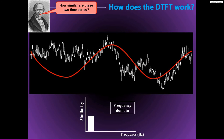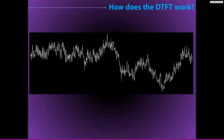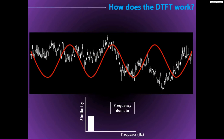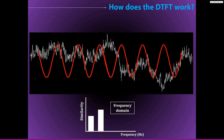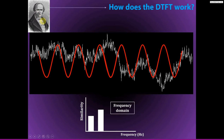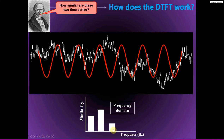The Fourier transform involves performing the same procedure for many steps. We start with exactly the same data and do the same procedure but with a sine wave of a different frequency. At each step of the Fourier transform, we are asking: how similar are these two time series? And whatever the answer to that question is gets plotted in the frequency domain plot, with the result corresponding to the frequency of the sine wave.